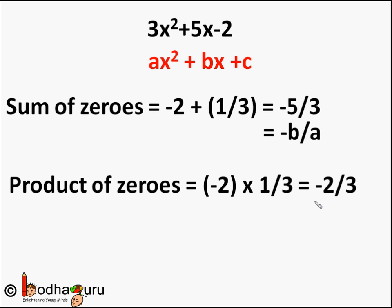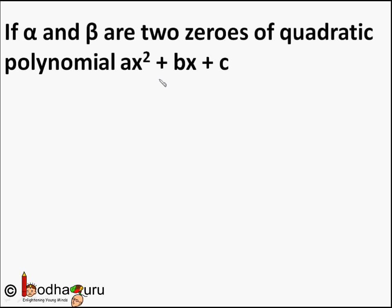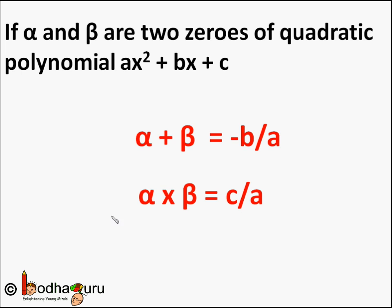The product of zeros equals -2 × 1/3 = -2/3. Now -2/3 is the constant term -2 divided by the coefficient of x², which is 3 — so it equals c/a. To put it in a generic way: if alpha and beta are the two zeros of a quadratic polynomial ax² + bx + c, then alpha + beta = -b/a, that is minus of the coefficient of x divided by the coefficient of x², and alpha × beta = c/a, that is the constant term divided by the coefficient of x².